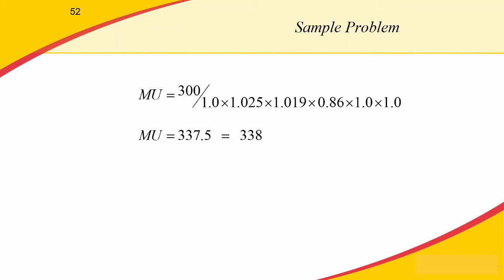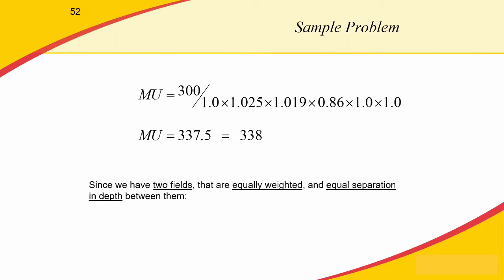The number of monitor units equals 300 centigrade — the dose we want to deliver per fraction — divided by 1 centigrade per monitor unit under calibration conditions. We apply our output factors: scatter and collimator factors of 1.025 and 1.019, and TMR of 0.86. We have no trays and no wedges, so those factors remain 1. This gives us a total of 337.5, so 338 MU to deliver our prescription dose. Since we have two equally weighted treatment beams with equal separation depth, we divide our MUs in half: 169 MU per treatment field.